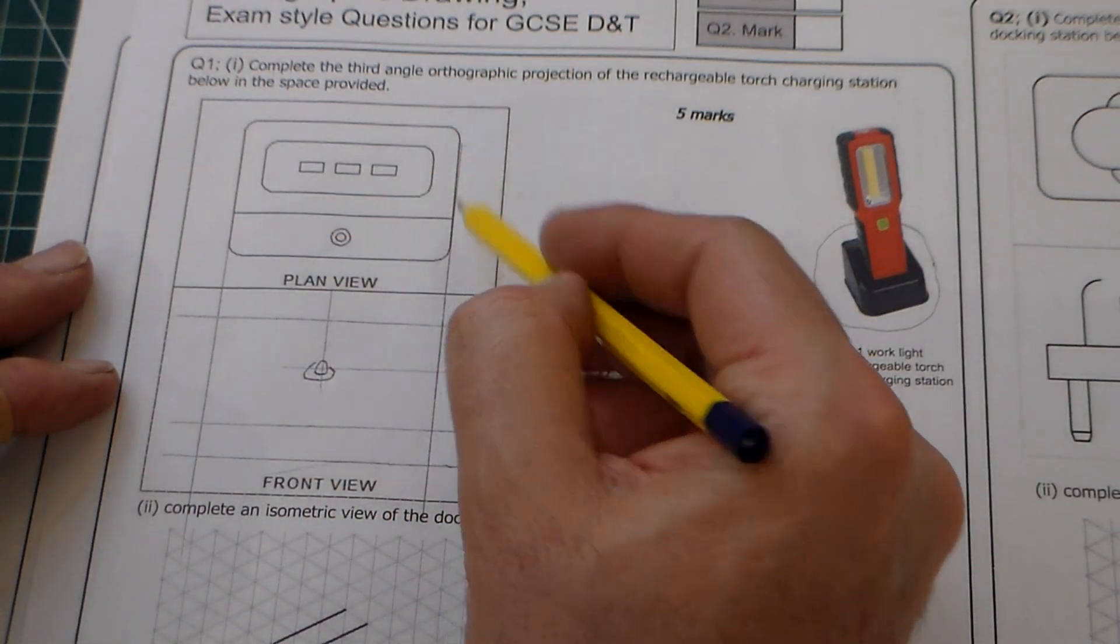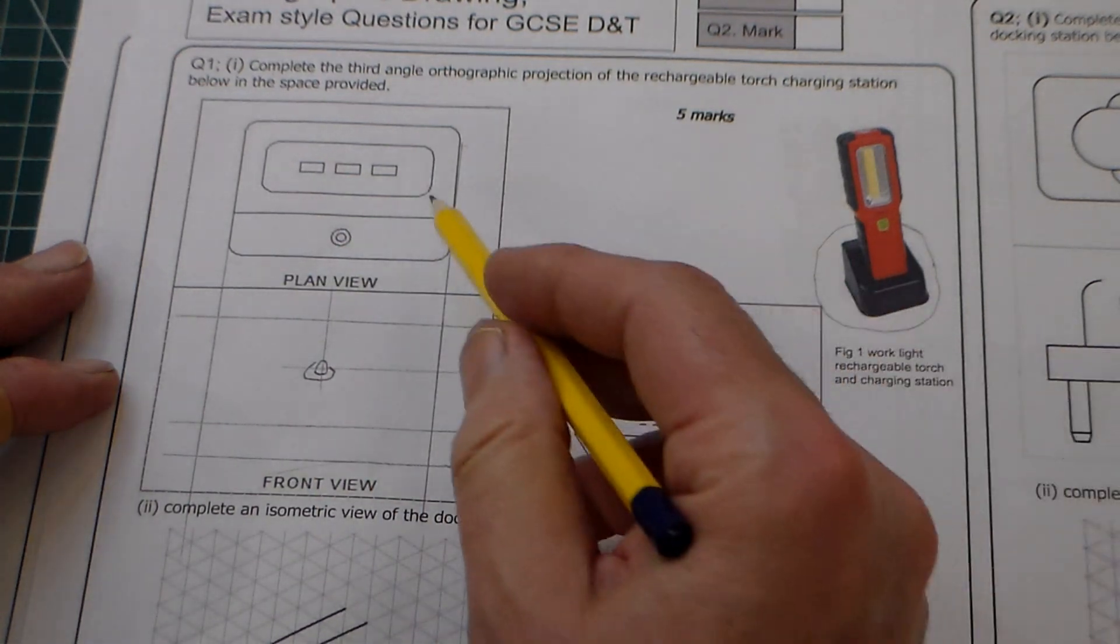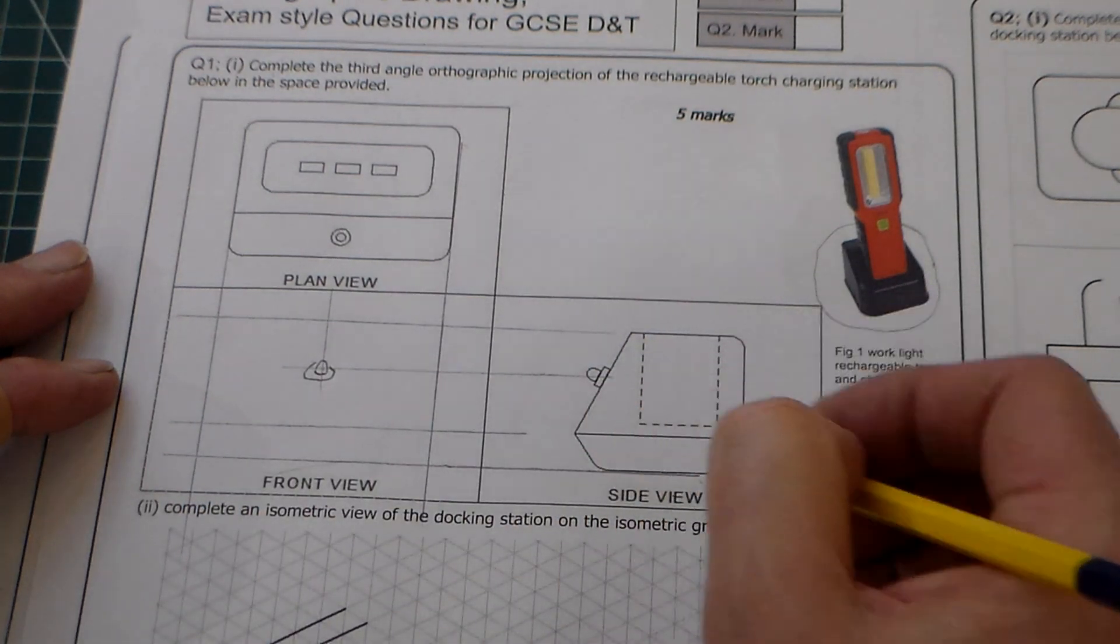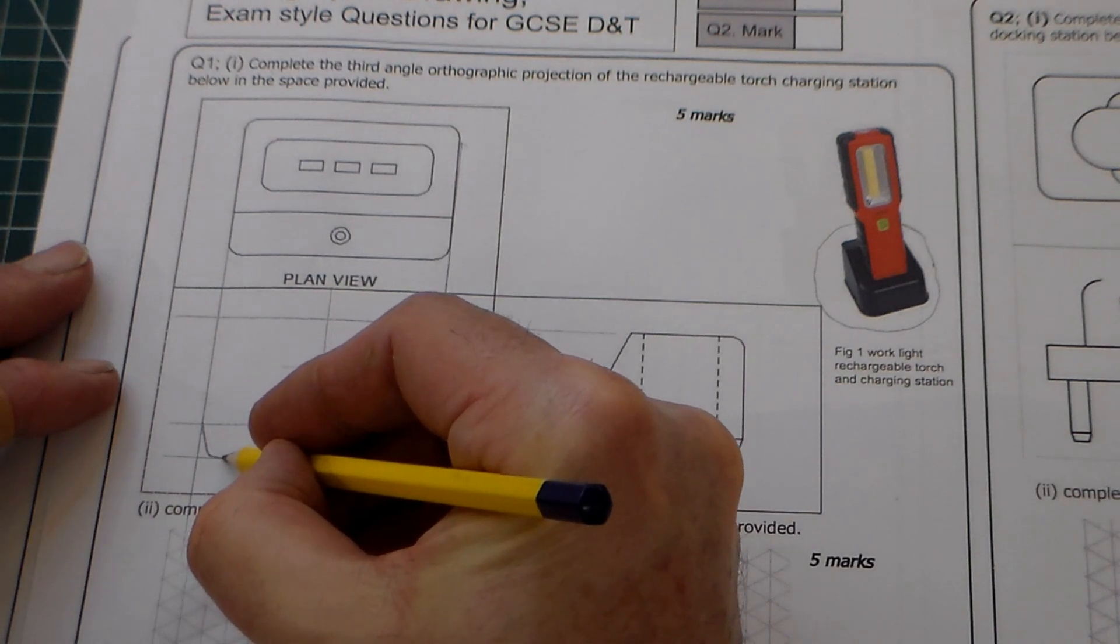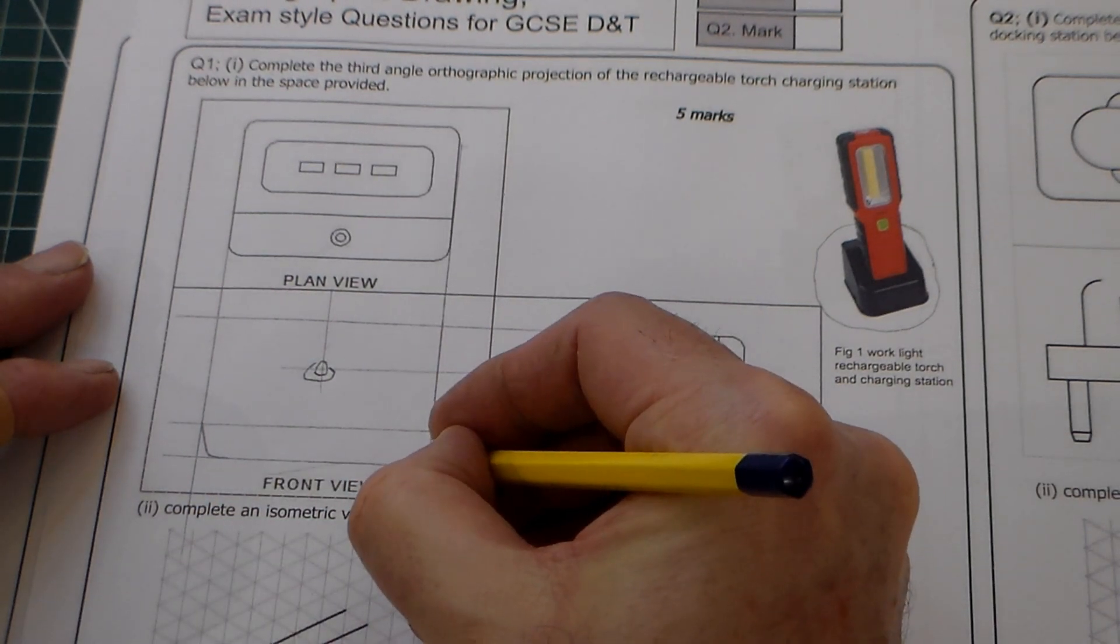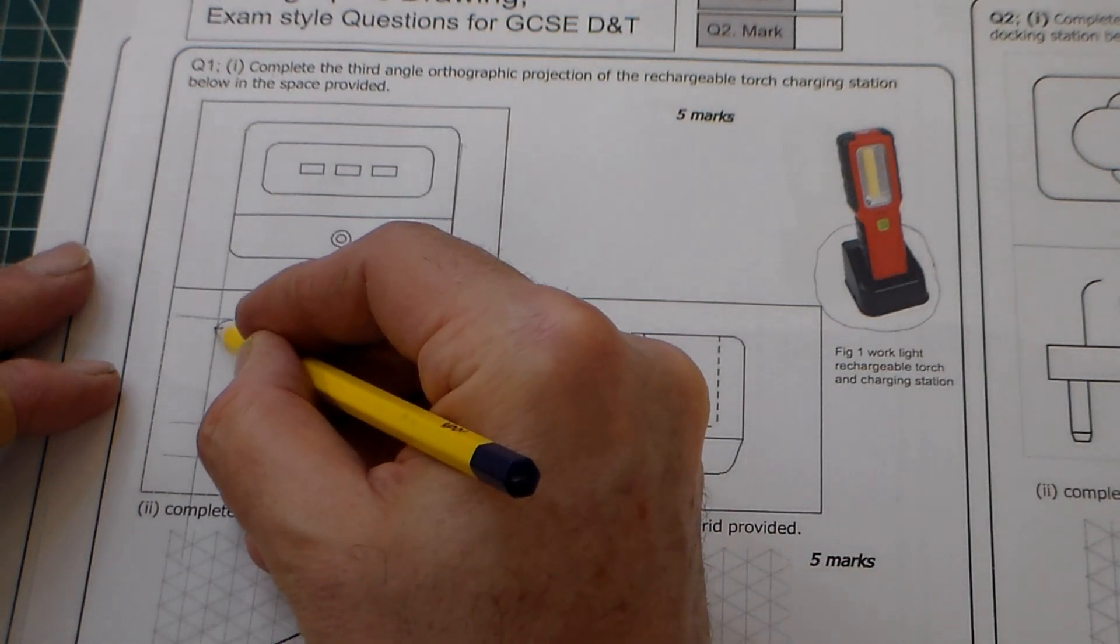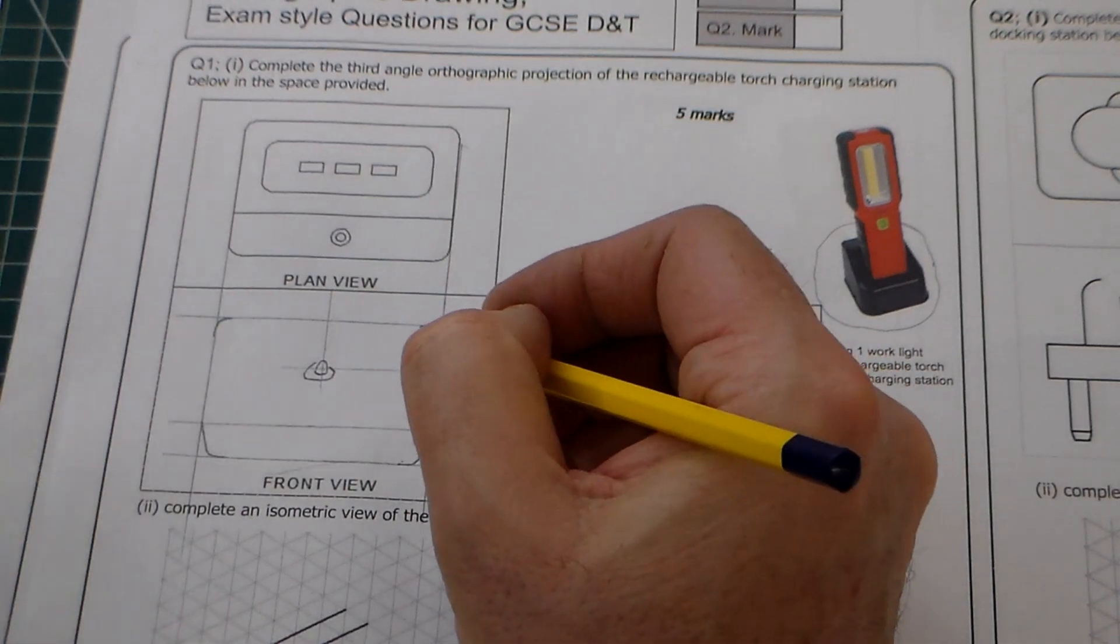Then we've got these radii here on the corners. You can see this, the shape of it is all rounded off. And we've also got a taper here on the base. So if we just come down here, we're going to just put these in by hand. I'm going to put those in by hand.